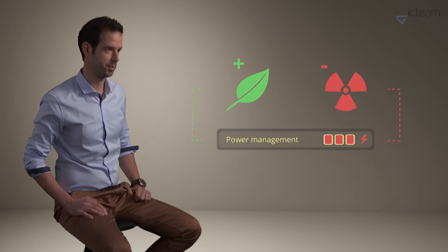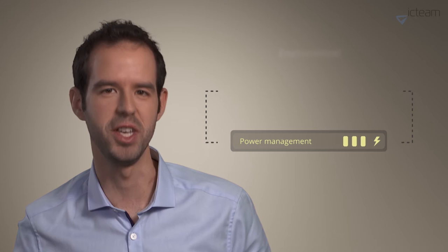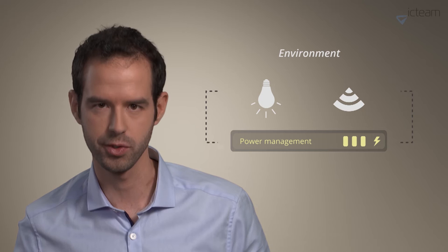To reach the holy grail of autonomy, we can harvest the power freely available in the environment, such as in the ambient light or in the emissions of Wi-Fi routers. But there is a problem, as this power is in the micro-watt range, which is too low to supply current generation smart sensors.